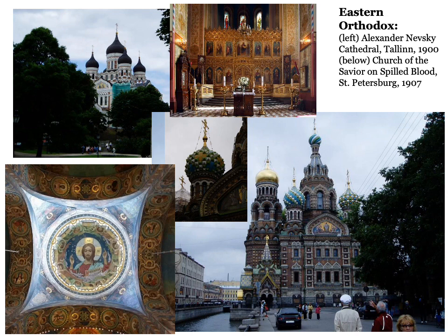Both spent tons and tons of money to make these very large, important churches, because in the Middle Ages and even through to the 20th century in most of Europe, this was seemingly the most important thing to the vast majority of people. The Church of the Savior on Spilled Blood is literally the most gorgeous church I've ever seen, and I've seen quite a lot in Europe.